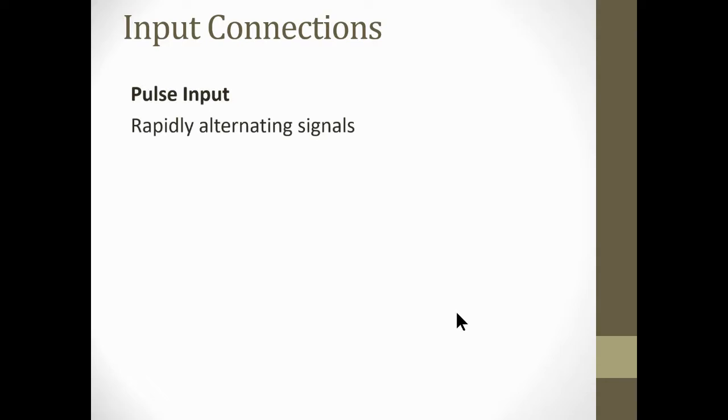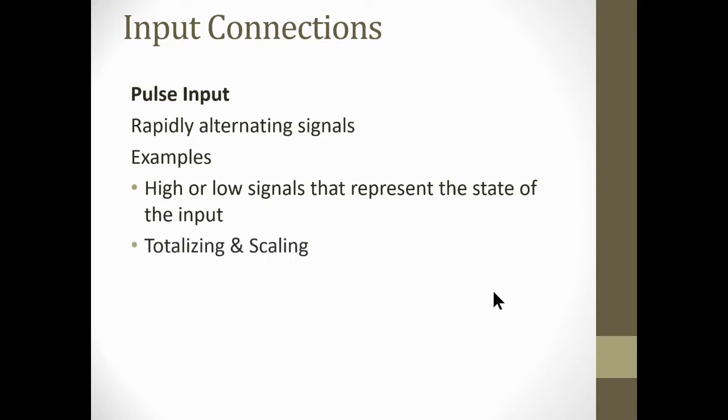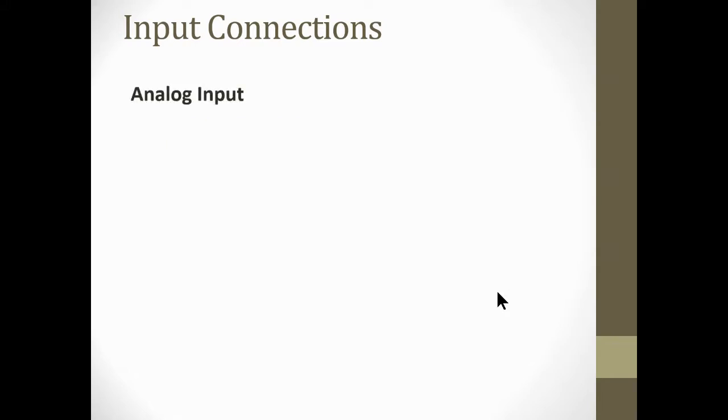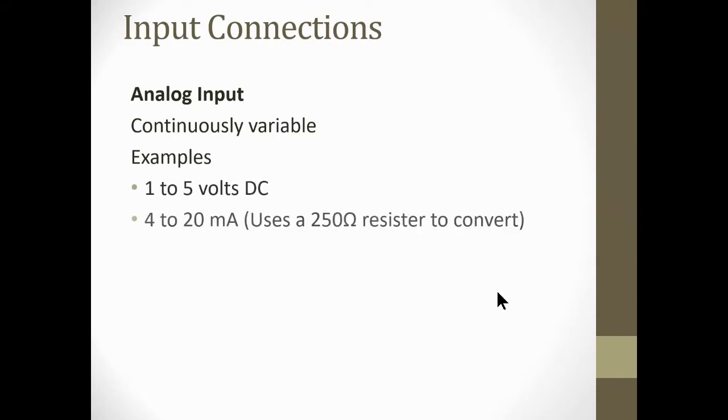Pulse inputs: rapidly alternating signals. Examples of that are high or low signals that represent the state of the input. Totalizing and scaling: we can do that with these input connections, converting pulse or rates of pulses to a scaled analog frequency. Analog input connections: these are always continuously variable. They say there's an infinite number of inputs on an analog input signal. Example of these is 1-5 volts, 4-20 milliamps. Of course we use that 250 ohm resistor to convert it to 1-5 volts, converting rate of pulses to scaled analog frequencies.